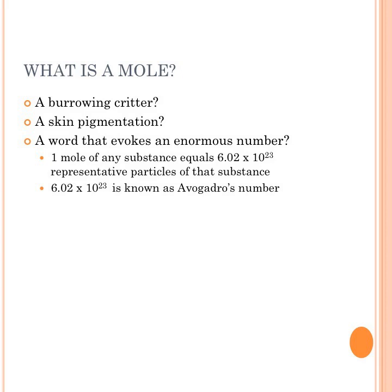This enormous number — 10 to the 23rd power. Consider: 10 to the 3rd is a thousand, 10 to the 6th is a million, 10 to the 9th is a billion, 10 to the 12th is a trillion, and so on. It's an enormous number, also known as Avogadro's number. Amadeo Avogadro did a lot of work determining the numbers of particles present in equal volumes of gases under static pressure and temperature conditions.